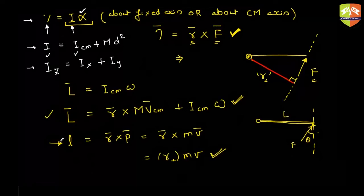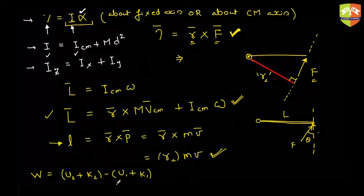Now the work energy theorem: work done on a rigid body follows the same equation: work done equals (U2 + K2) minus (U1 + K1), where U is potential energy and K is kinetic energy. Potential energy in mechanics is of two types: elastic potential energy, mainly due to springs, and gravitational potential energy.